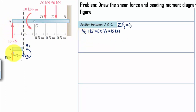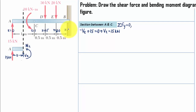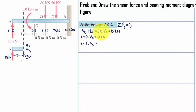At A, x equals 0; at C, x equals 1; at D, x equals 1.5; and at the fixed end B, x equals 2.5. Putting x equal to 0 gives shear force at A as 15 kilonewtons, and putting x equal to 1 gives the shear force at C also as 15 kN. Shear force does not depend on x, so both values are 15 kN.